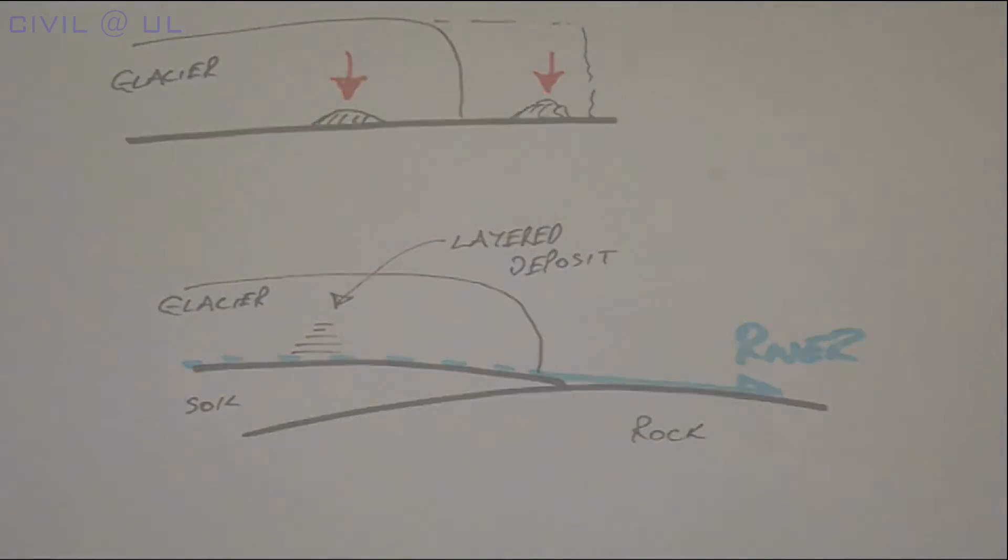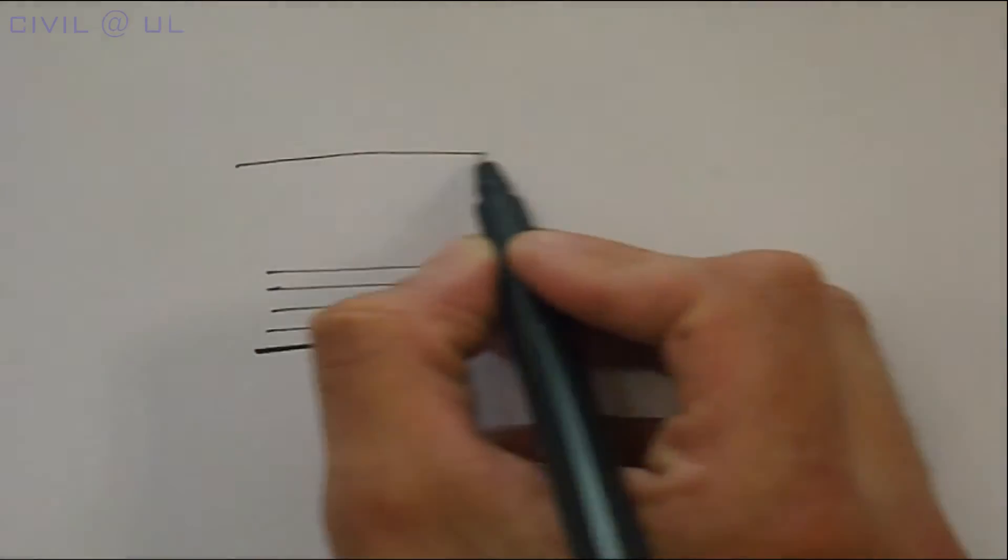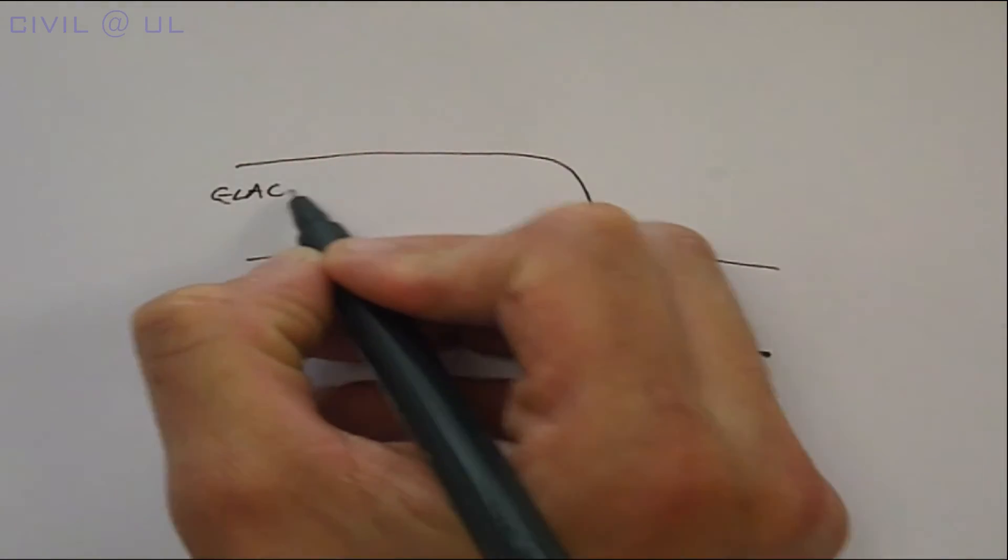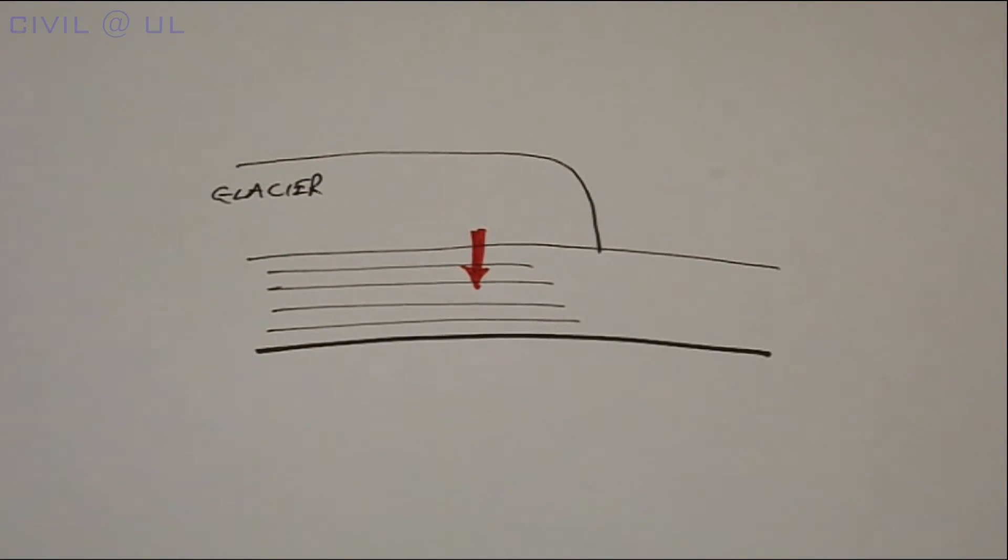Let's look at how glaciation has affected the type of foundation required to support a building. As the glacier moves across the land, its weight compresses the material that lies beneath.